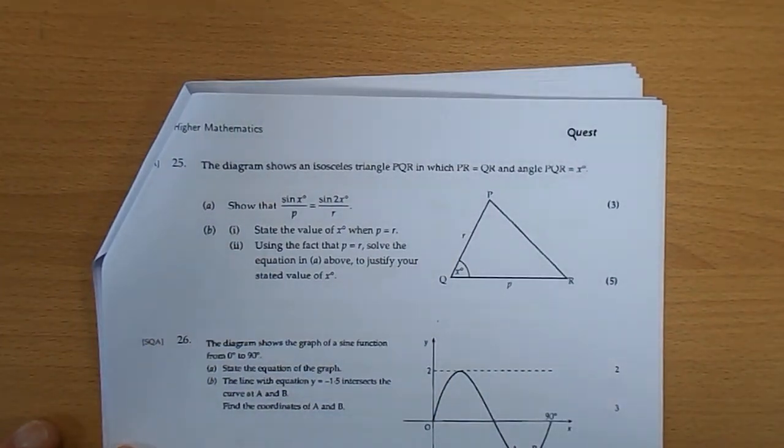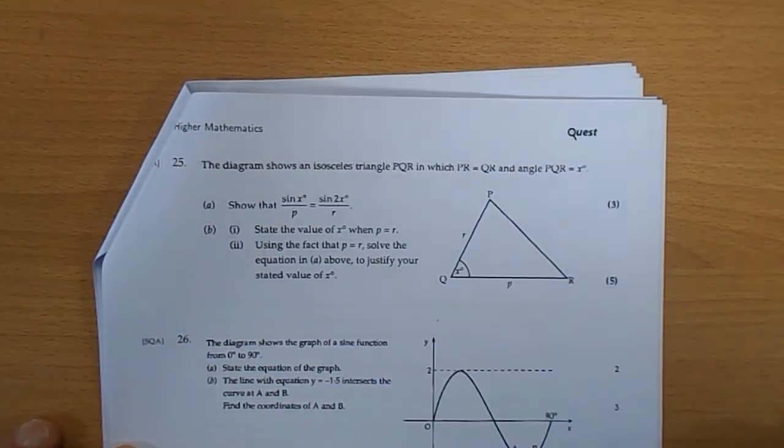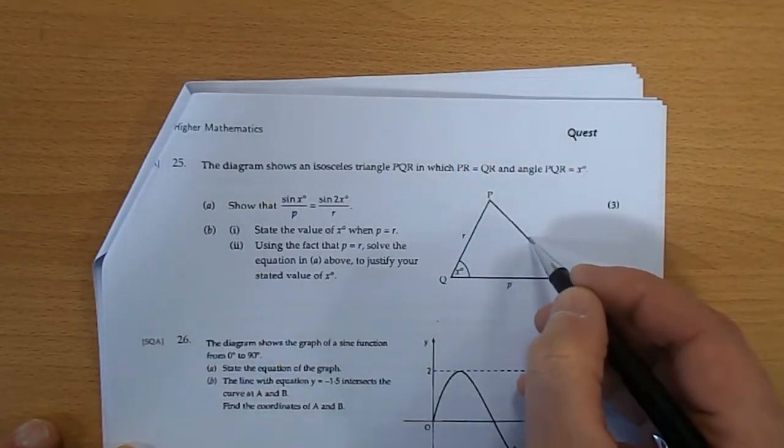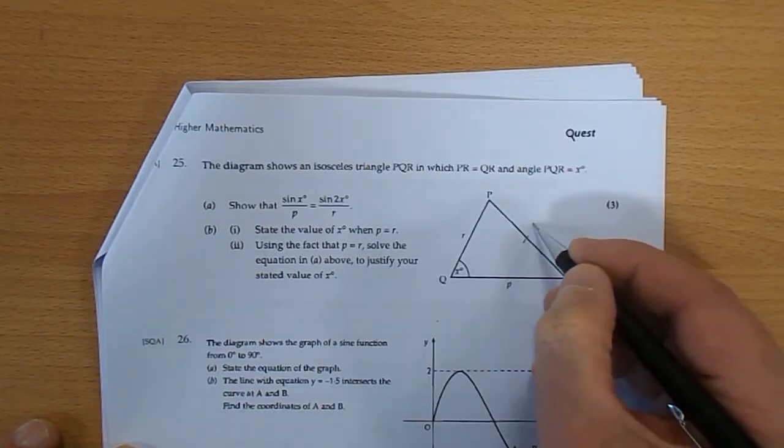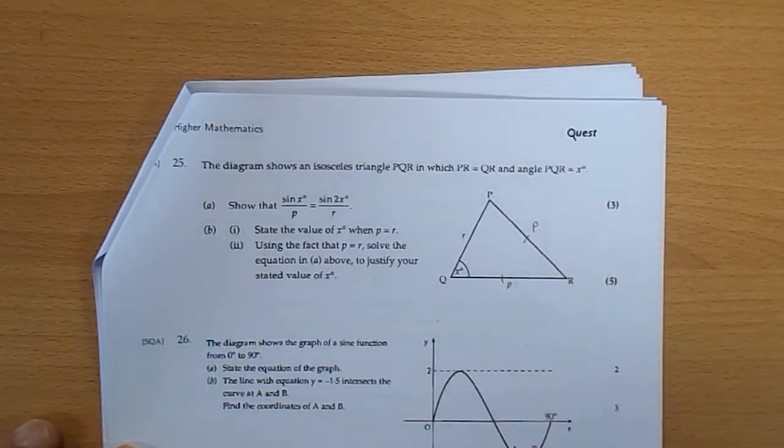Moving on to question 25. The diagram shows an isosceles triangle PQR in which PR equals QR. Well, if PR equals QR, then I'm as well just writing the letter P there, and they're both the same.